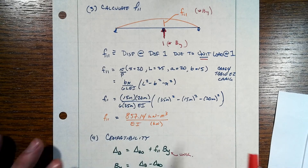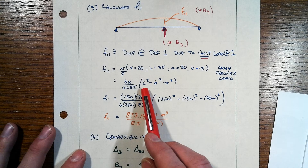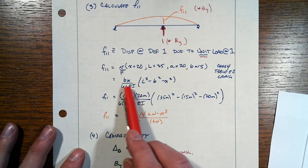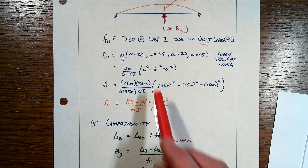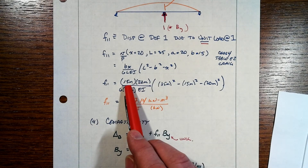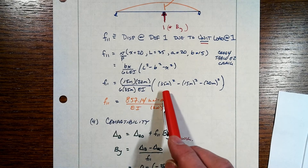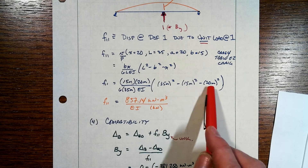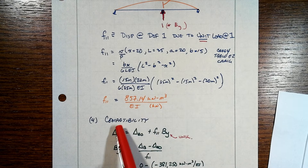You could obviously put P equal to 1 into this expression — I'll show you why I don't do that in just a second. It's a matter of semantics really. So we've got Bx over 6LEI times this whole quantity: L squared minus B squared minus x squared. Put the numbers in carefully — really easy to get those messed up. And you come up with a value of 857.14 over EI in this specific case.